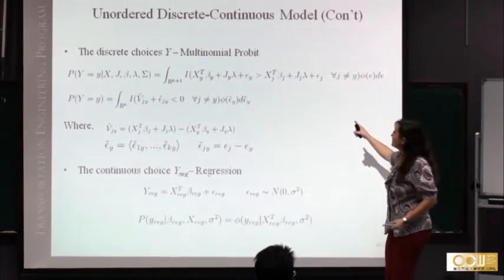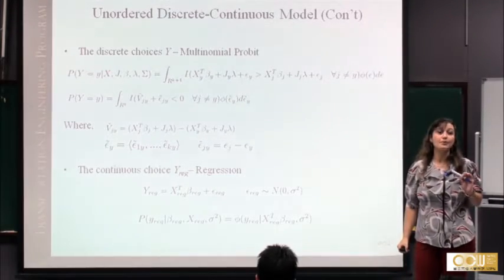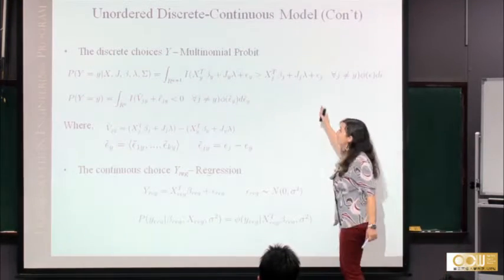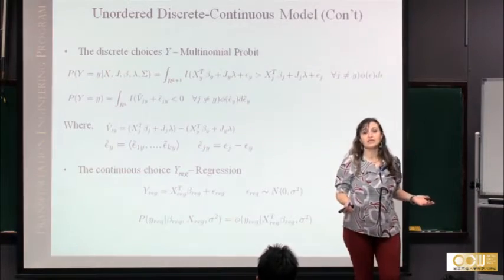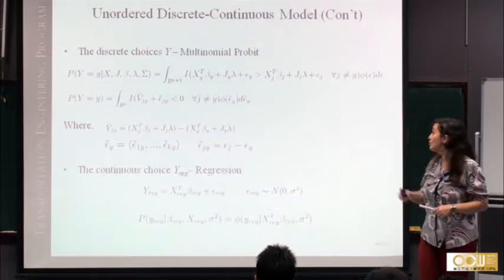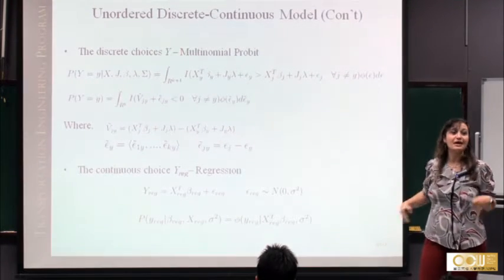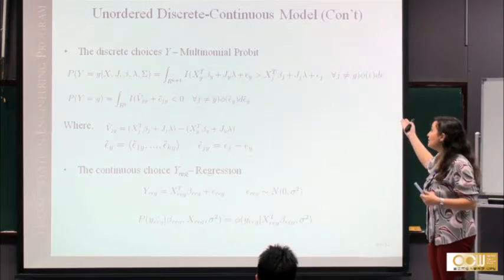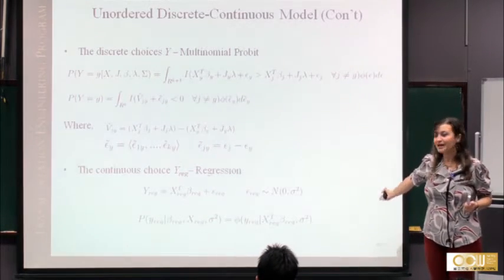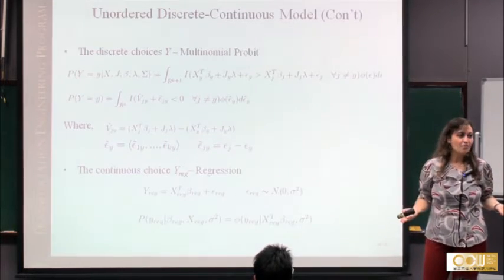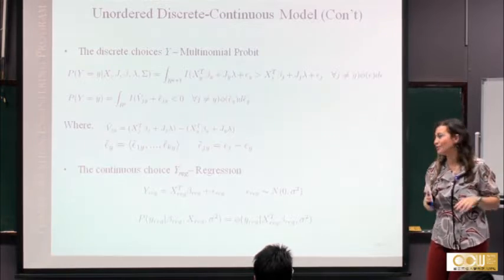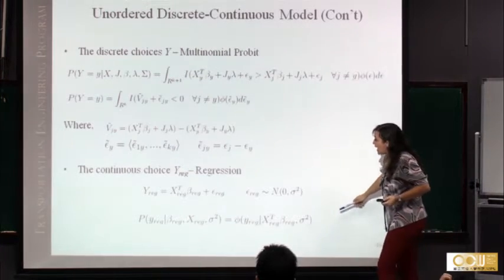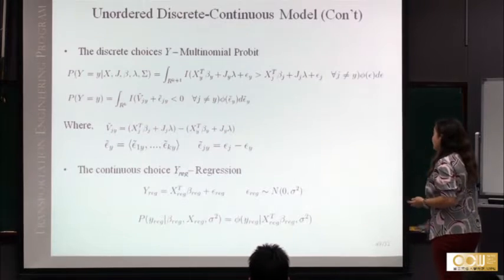To join the continuous part (total mileage), we use multinomial probit for the discrete ownership decision. The choice of probit was motivated by the need to connect discrete and continuous parts through a multivariate normal distribution. Having logit in the discrete part and normal in the continuous part creates two different families of random variables that are difficult to handle together. By using probit upstairs and regression downstairs, we have just a multivariate normal distribution — not easy, but feasible.